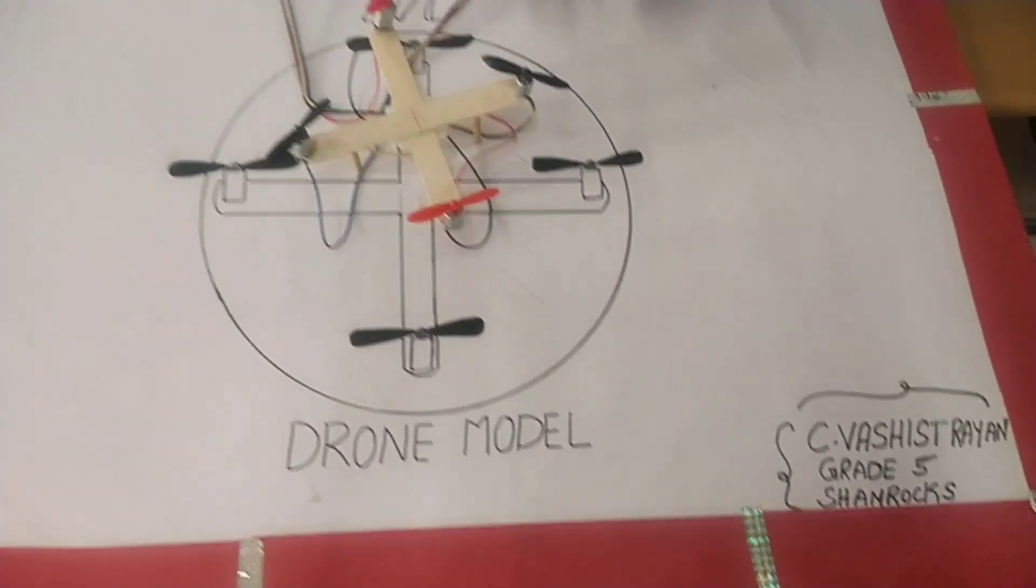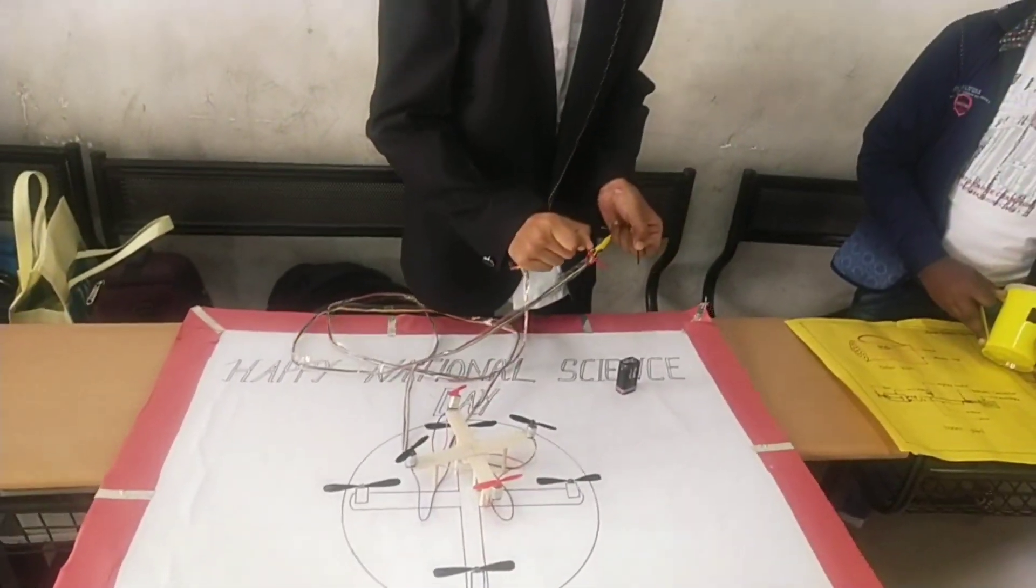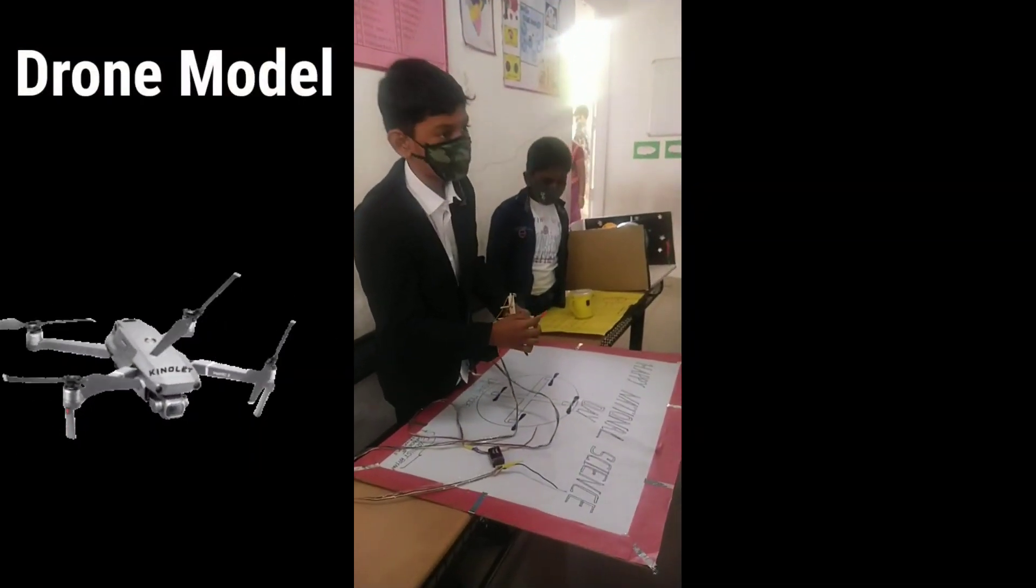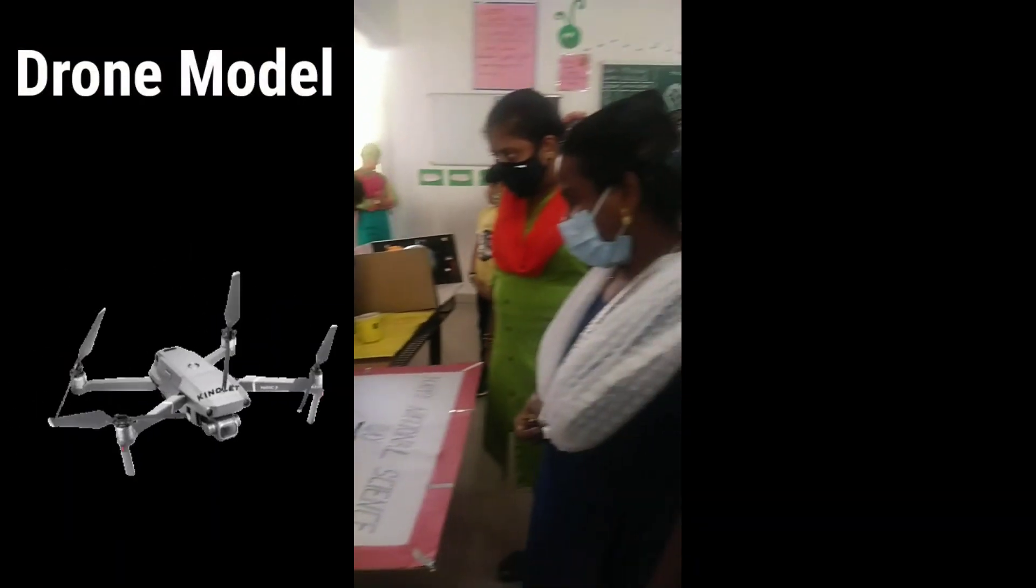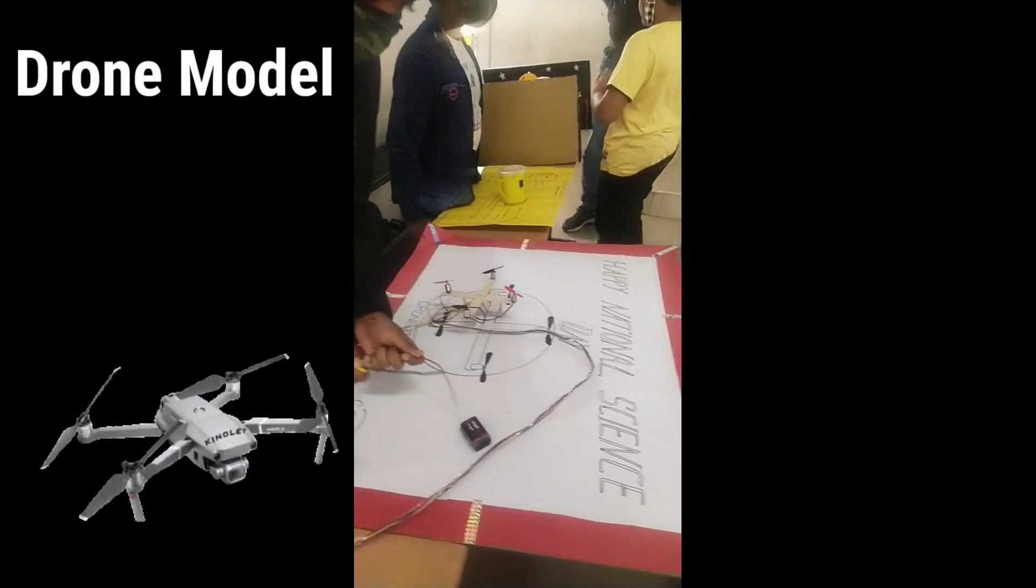Using two ice cream sticks, four motors, four propellers, a rechargeable battery, and 1.5mm wire. Here I'm explaining the drone model to some of the parents who came to view the exhibition. Here I am keeping the negative wire to positive point and the positive wire to negative point.